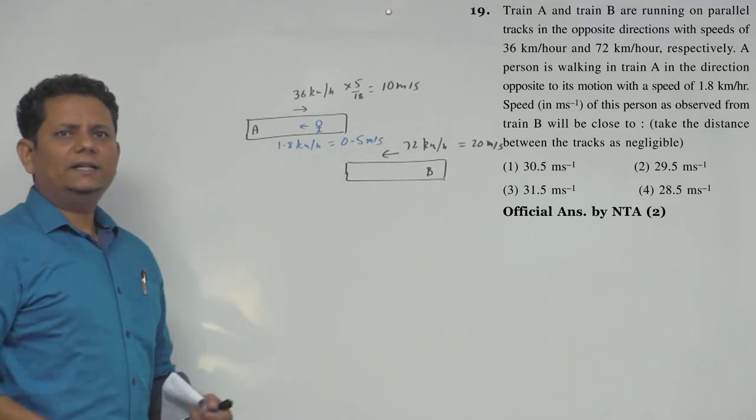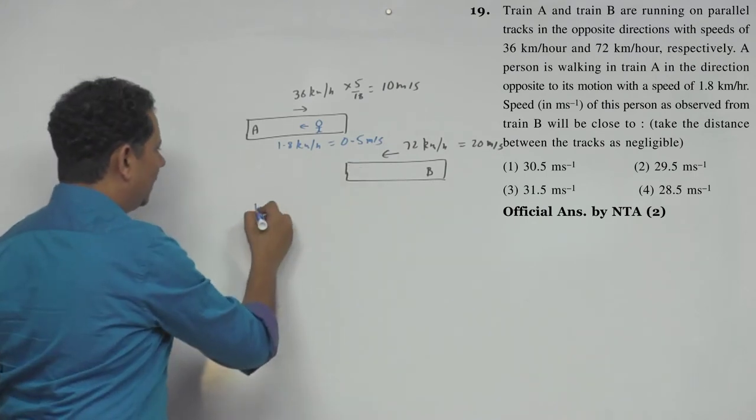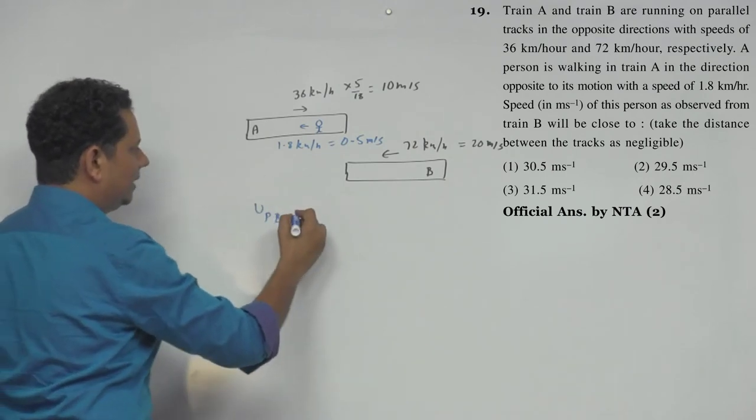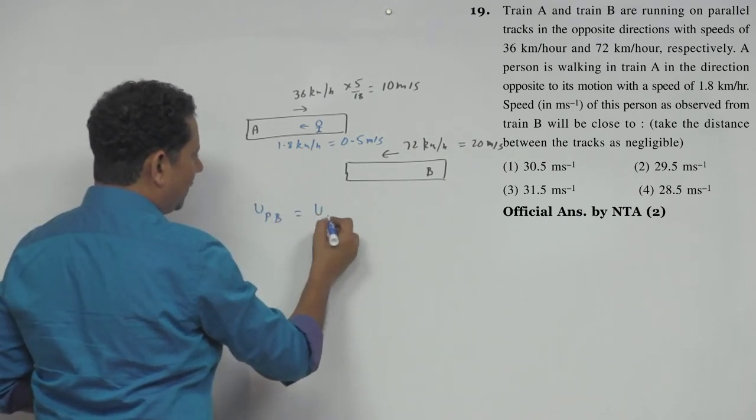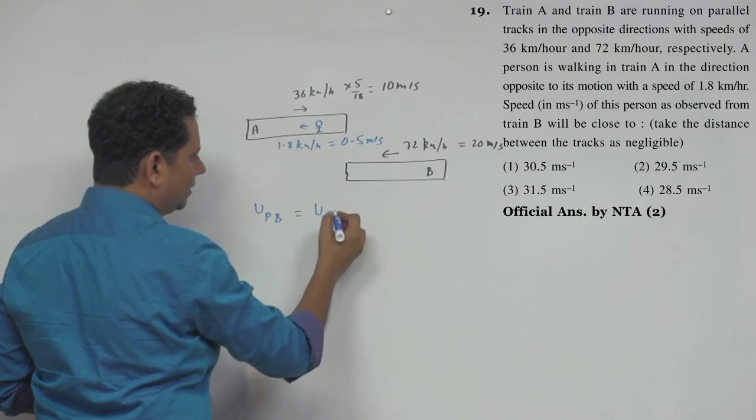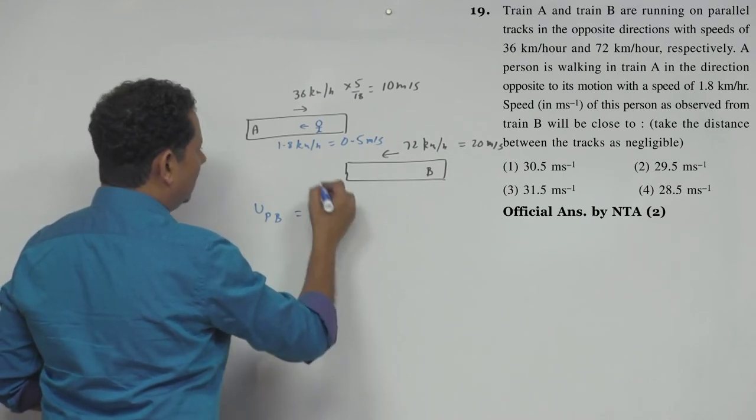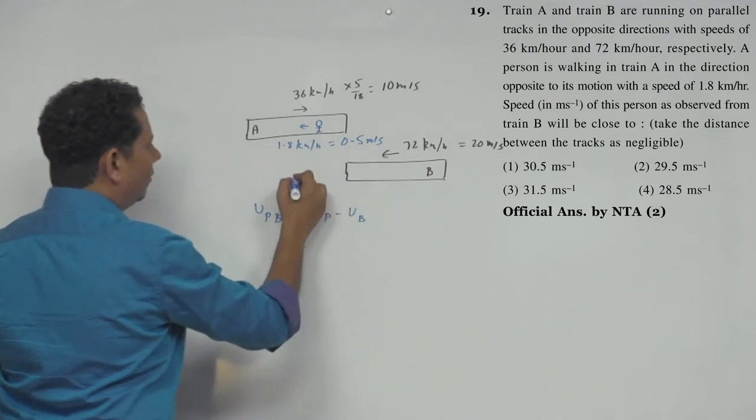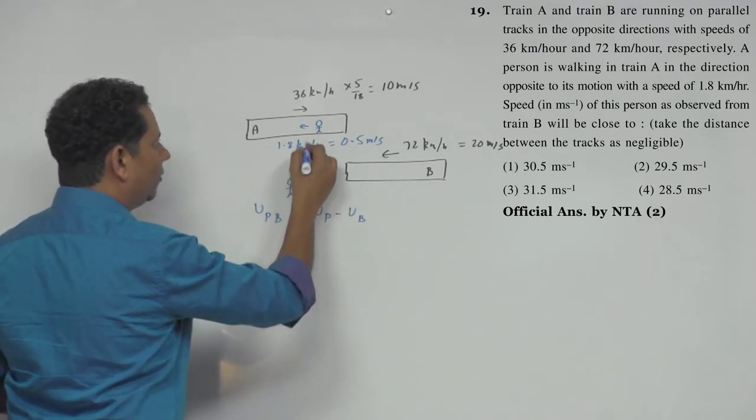So this will be equal to velocity of person from ground frame minus velocity of train B. Now if from ground frame we observe this, then in ground frame...